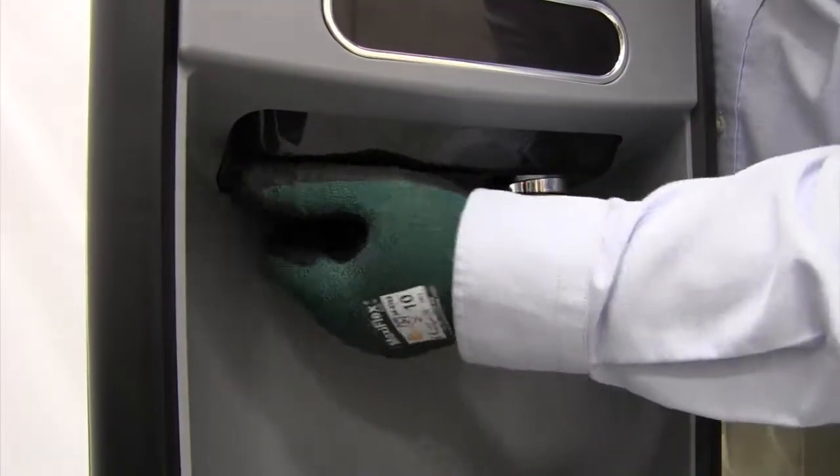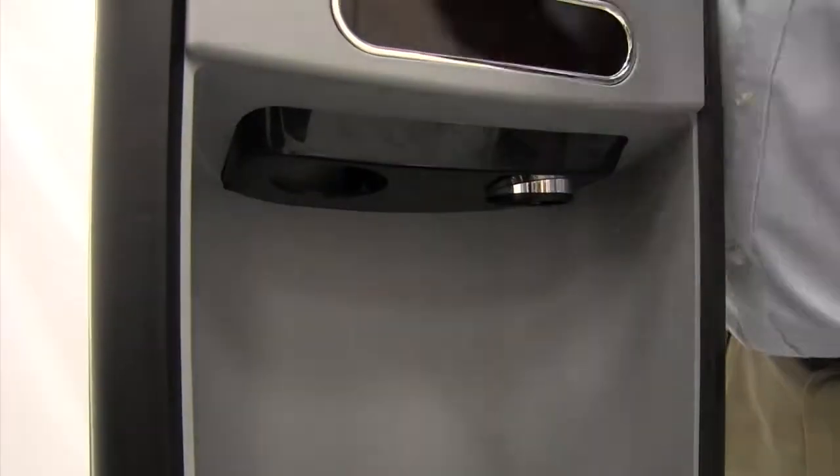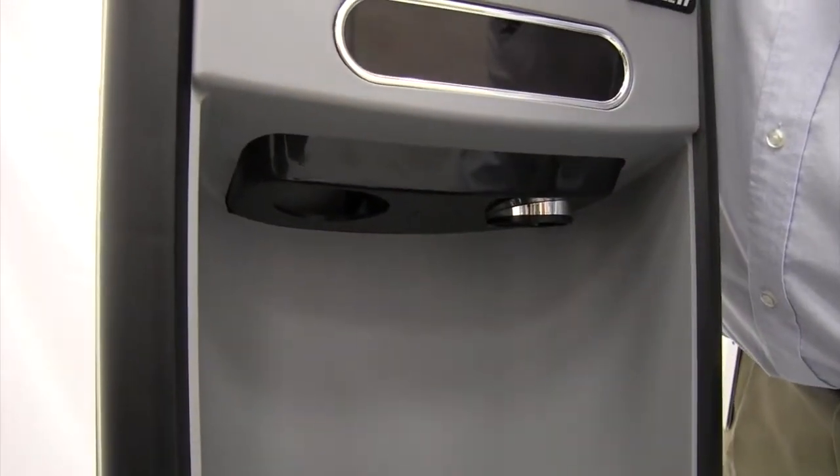The first step will be to remove the front facade and the side panels, starting with the ice dispense chute cover.